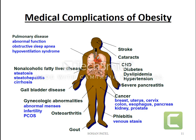Obesity is responsible for some varieties of complications in our body. Due to obesity, pulmonary disease has more chances. Non-alcoholic fatty liver disease is also implicated. Gallbladder disease, gynecological abnormality in females, osteoarthritis, gout, phlebitis, cancers, severe pancreatitis, chronic heart disease, diabetes mellitus, dyslipidemia, hypertension, cataract, and stroke — these are the complications occurring during obesity.